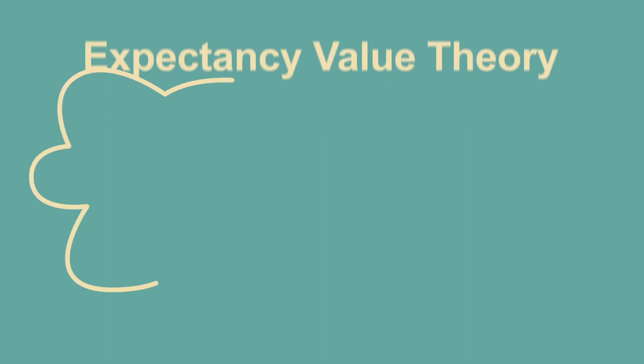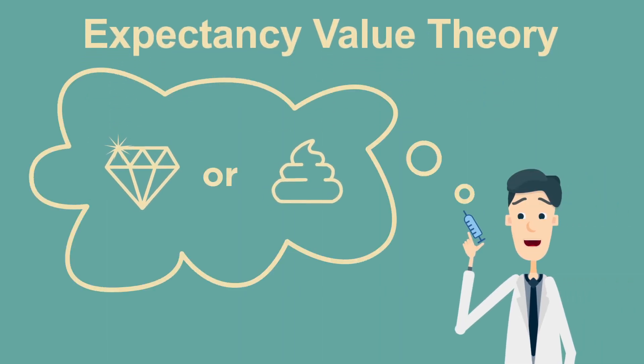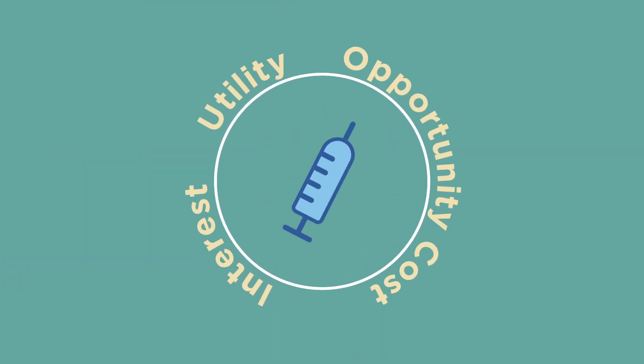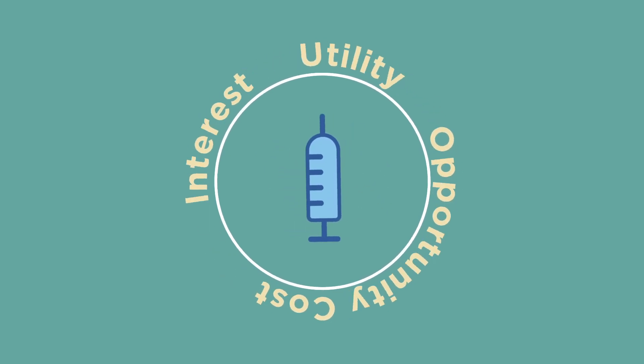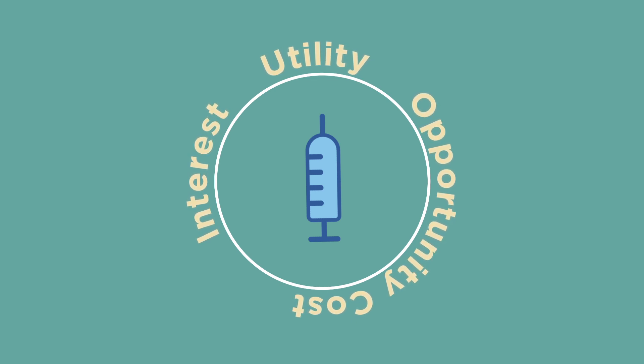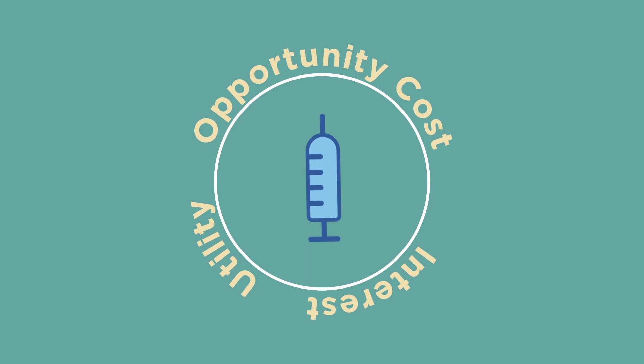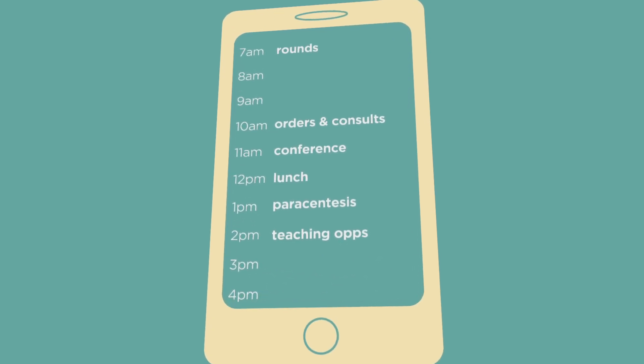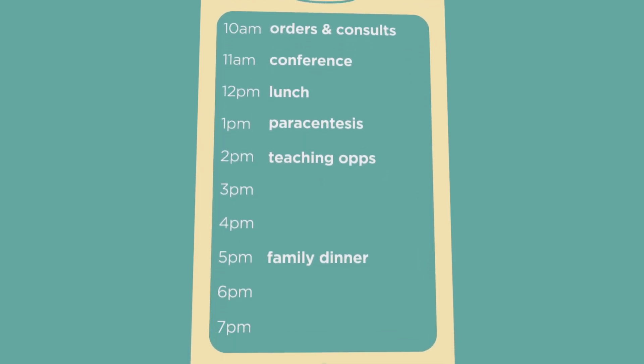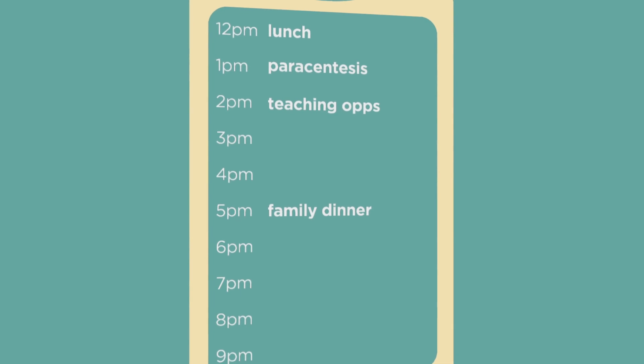Expectancy value theory tells us that learners choose to do a task based on how valuable it seems. To enhance the perceived value of a task, Dr. Lucia tries to optimize interest, perceived utility, and opportunity cost. She maximizes interest and perceived utility by emphasizing how a task is relevant for Jim's patients and his goals. She optimizes opportunity costs by being mindful of when she introduces a task. Dr. Lucia recognizes that trying to teach during a time crunch can make teaching seem destructive. So she stays aware of her team's workflow and daily priorities. She will never make Jim choose between learning to do a paracentesis or going home to see his lovely family.